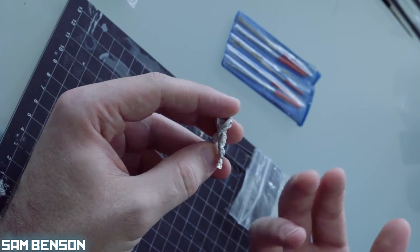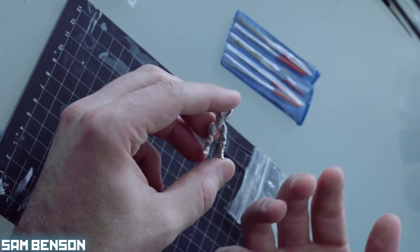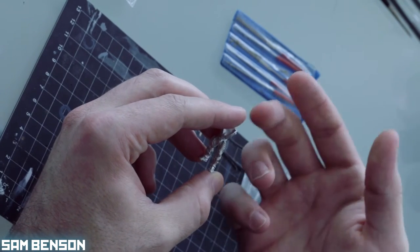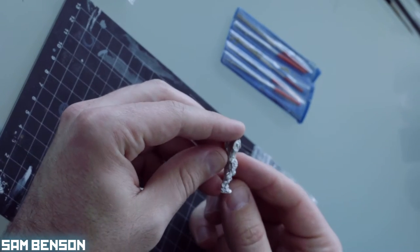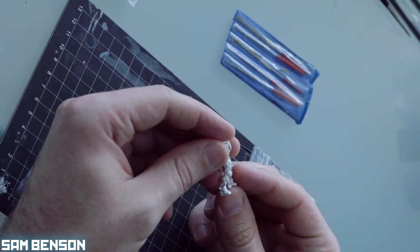Basically start somewhere on the model, anywhere you like, and then work your way around in the same direction, following directly from where you just cleaned up. What that means is you just don't miss anything.